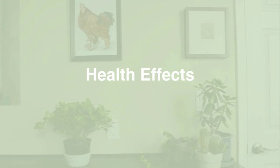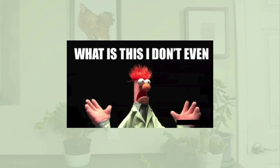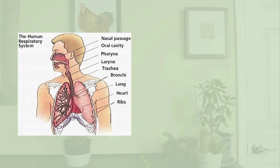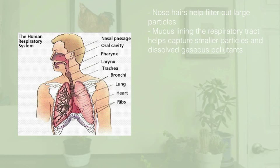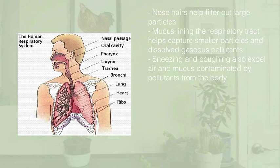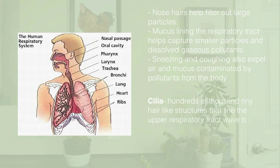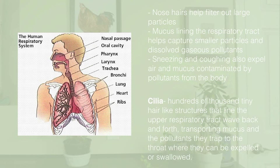The body already has natural defenses against air pollutants, but they can be overwhelmed. The respiratory system has numerous ways to protect from pollutants. For example, nose hairs help filter out large particles, mucus lining in the respiratory tract helps capture smaller particles and dissolve gaseous pollutants, sneezing and coughing help expel air and mucus contaminated by pollutants. And cilia — hundreds of thousands of tiny hair-like structures that line the upper respiratory tract — wave back and forth, transporting mucus and the pollutants they trap to the throat where they can be expelled or swallowed.